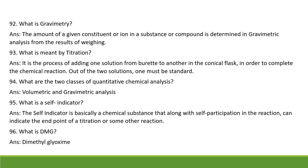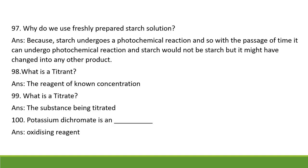Expand DMG: dimethylglyoxime. Why do we use freshly prepared starch solution in iodometric titration? Because starch can undergo a photochemical reaction over time and change into another product, so it must be used as soon as it is prepared. What is a titrant? It is the reagent of known concentration. What is a titrate? The substance being titrated. Potassium dichromate is an oxidizing reagent.